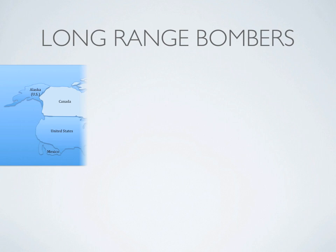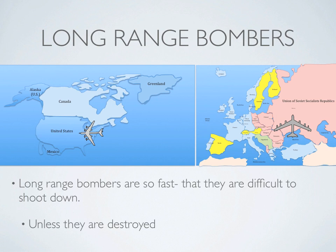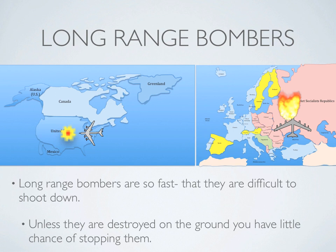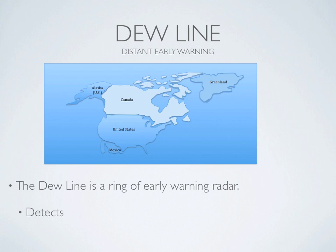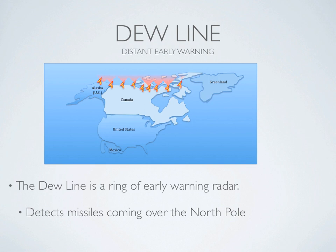Long-range bombers like the B-52 and the Backfire bomber are so fast they are very difficult to shoot down. Bombers carry a large nuclear payload, and no matter how many you shoot down, it is certain that some will get through to their targets. The DEW line is a string of radar stations in northern Canada that will detect ballistic missiles coming over the North Pole headed to North America — this is NATO's early warning system.